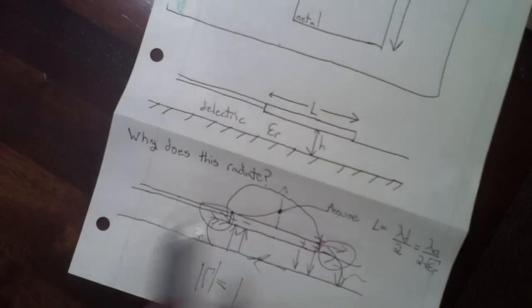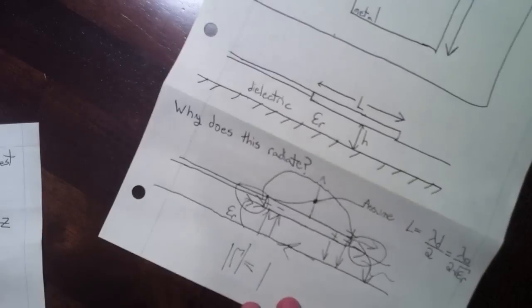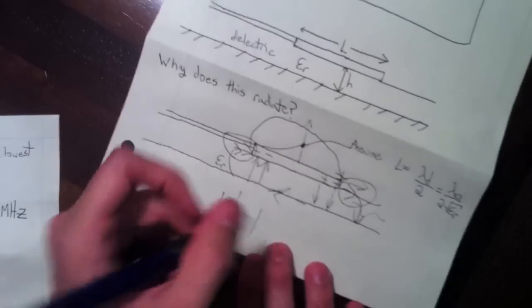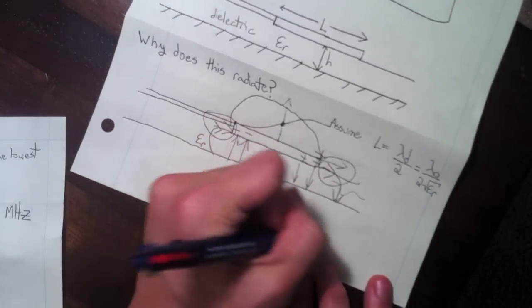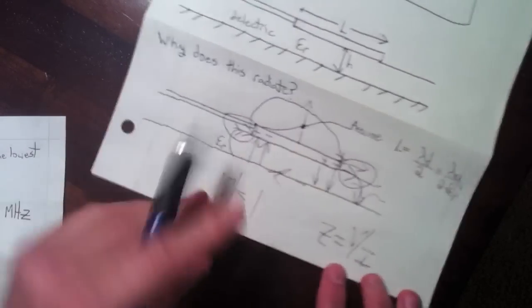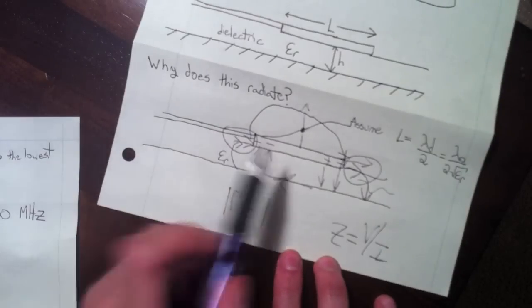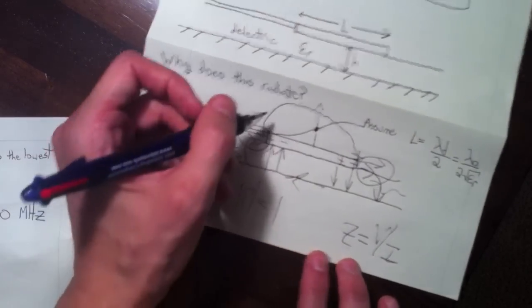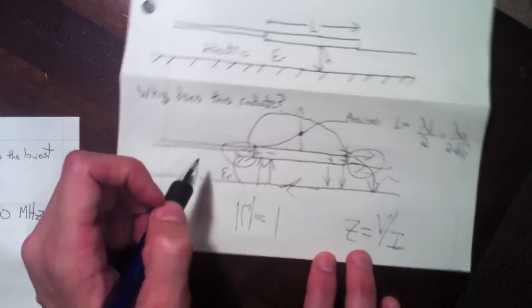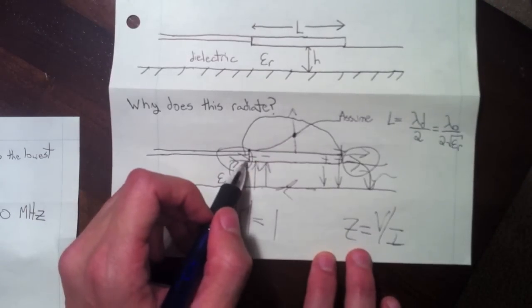So what happens to the impedance of the patch? Remember the impedance Z is just the ratio of the voltage to the current at the place where you feed the antenna. Here we have the transmission line feeding our patch antenna.